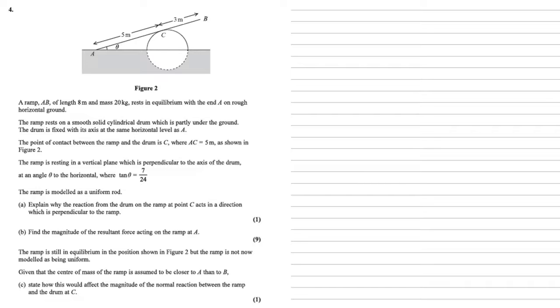A ramp AB of length 8m and mass 20kg rests in equilibrium with the end A on rough horizontal ground. The ramp rests on a smooth solid cylindrical drum which is partly under the ground. The drum is fixed with its axis at the same horizontal level as A. The point of contact between the ramp and the drum is C where AC equals 5m, as shown in figure 2.